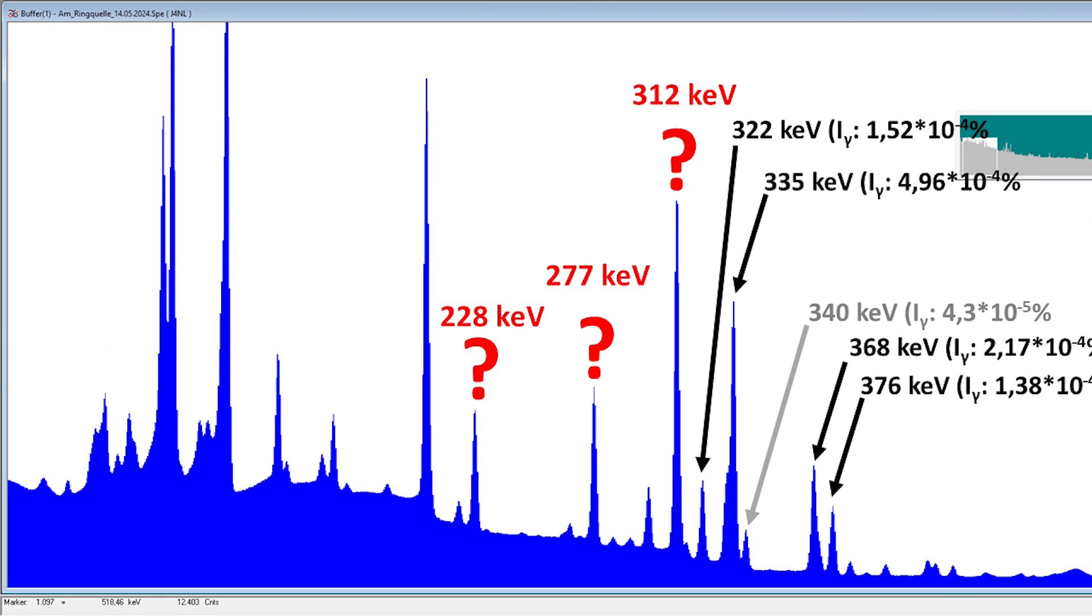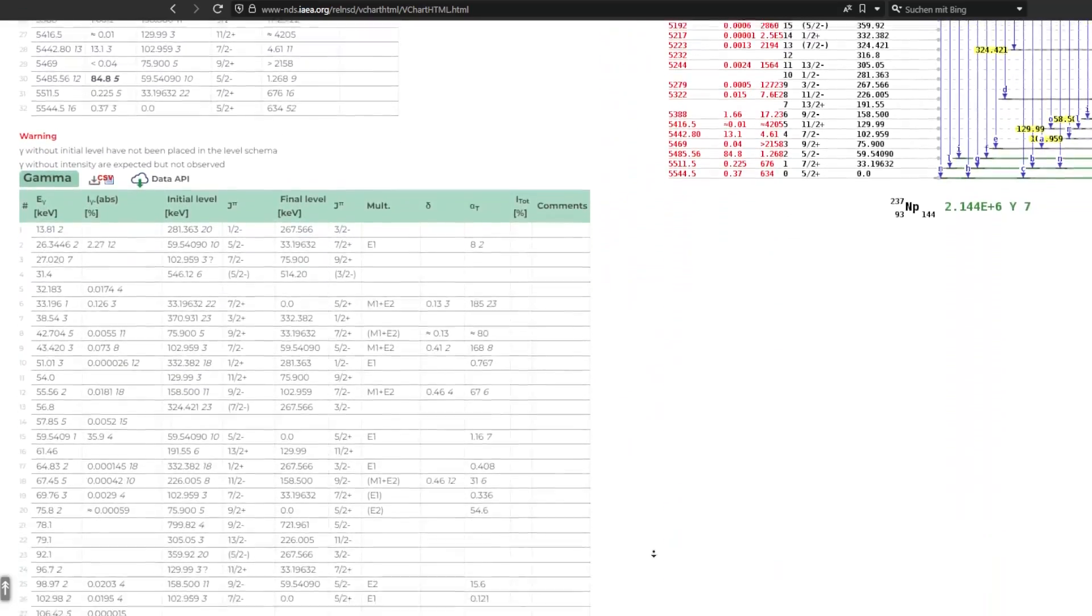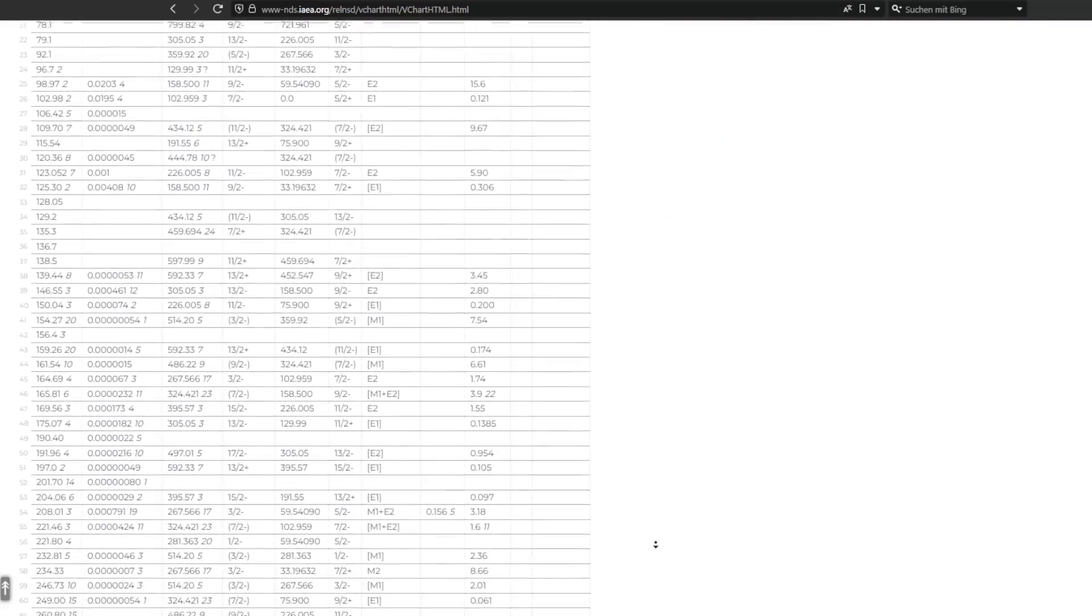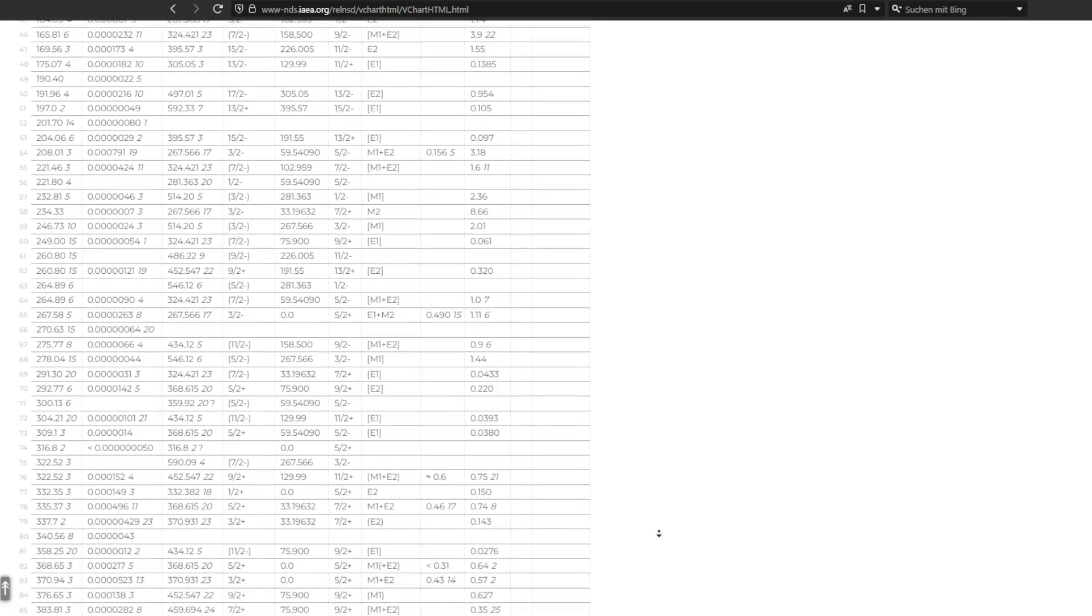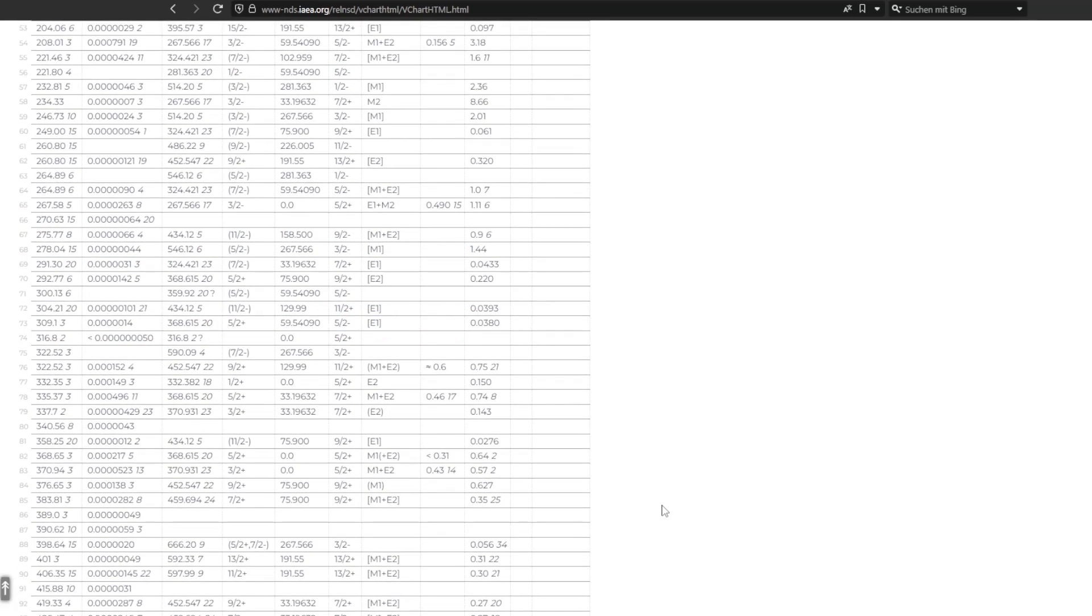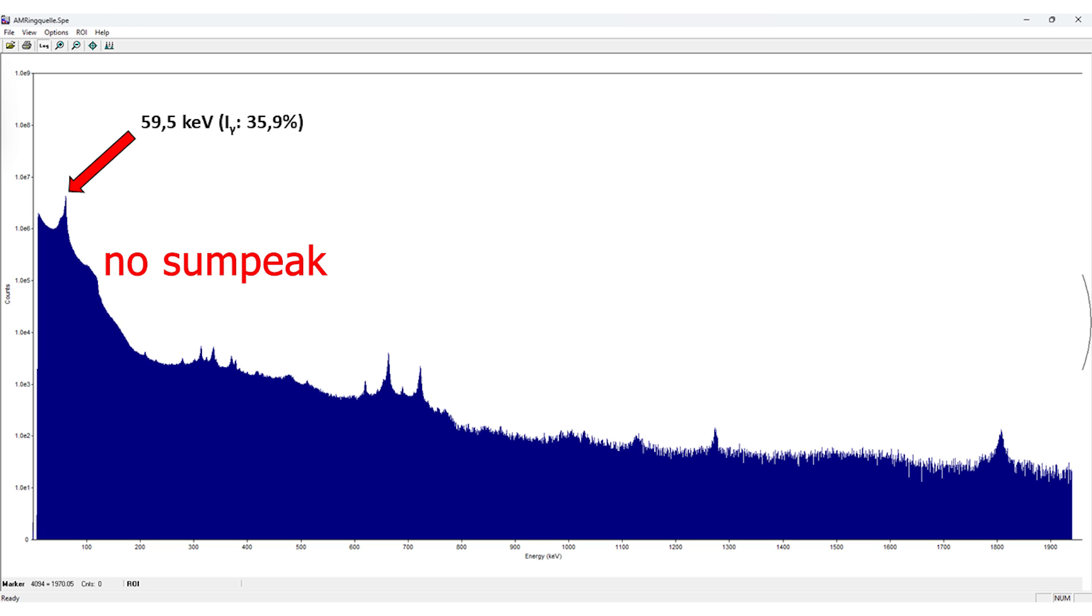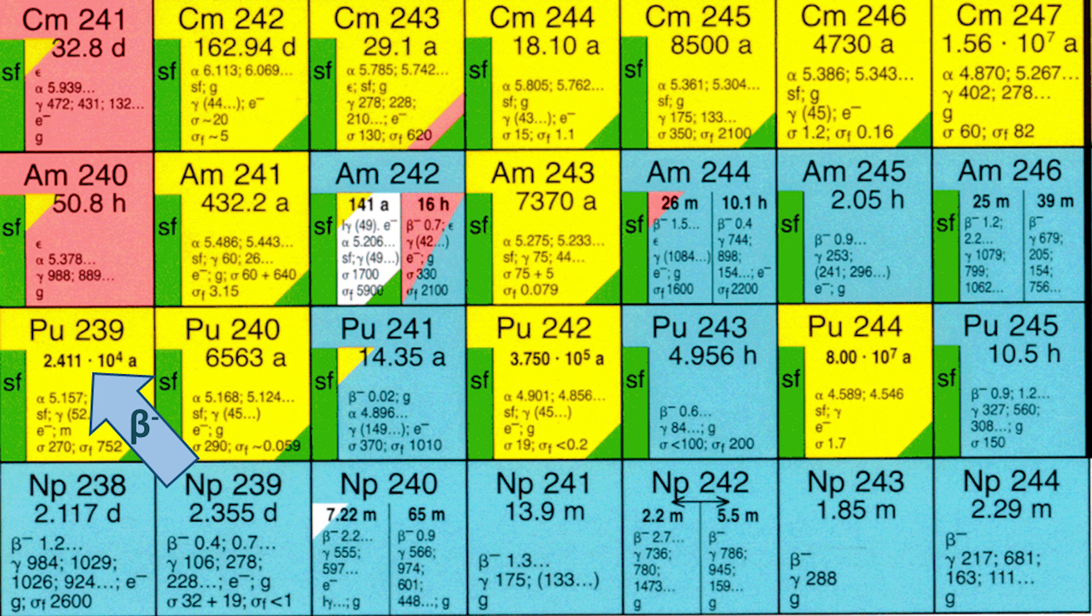These peaks over here. A look at the NDS shows that the 228, 277 and 312 do not belong to the decay of americium-241 to neptunium-237. They can't be some peaks either because we would also see one at around 120 keV. But taking a step back and considering how americium-241 is produced, now it gets interesting.